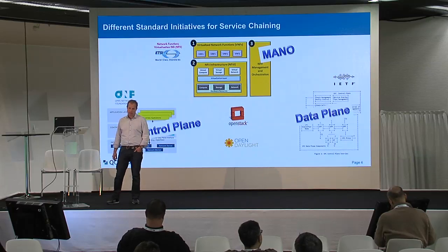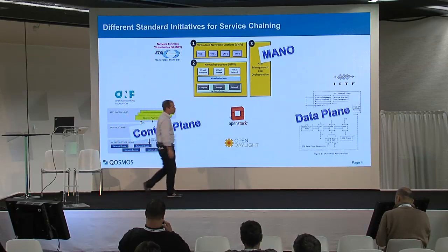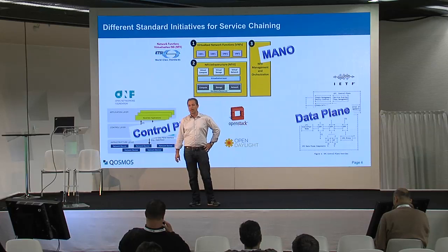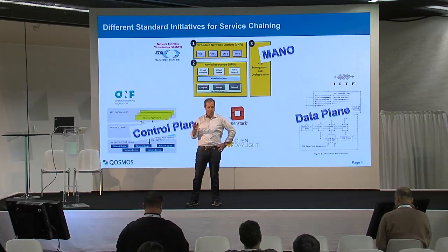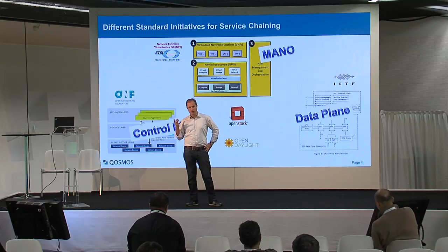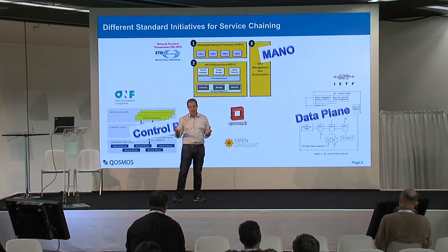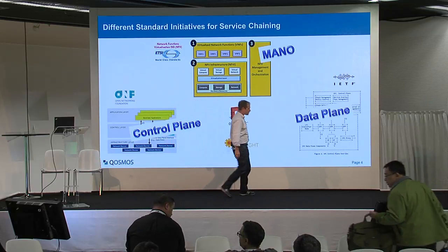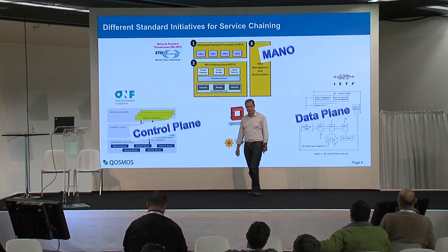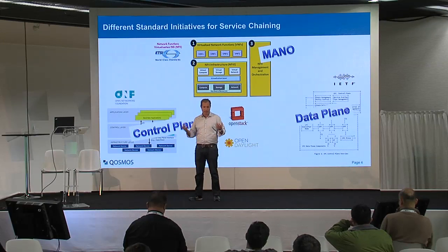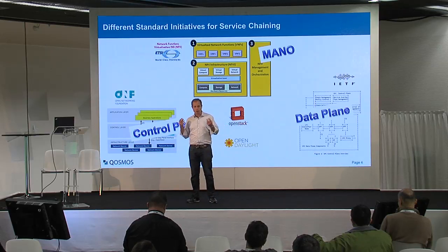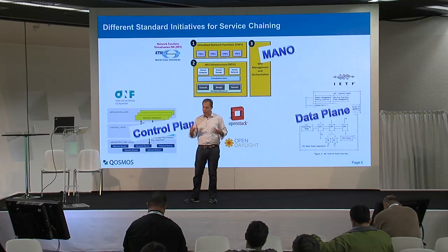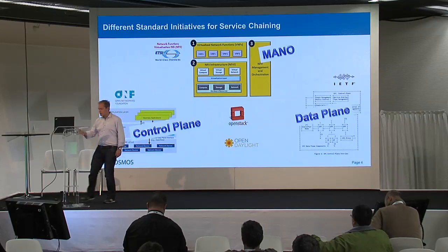At the IETF, there is a very active working group called SFC — service function chaining. There are mainly two proposals: one from Cisco called NSH, and another from Huawei called SCH. During the last IETF in Toronto, it was decided to merge these two protocols. The idea is to tag IP packets and extend them with chain path identifiers or chain IDs. This protocol — NSH or SCH — is a great place to also carry layer seven information such as application IDs or metadata.